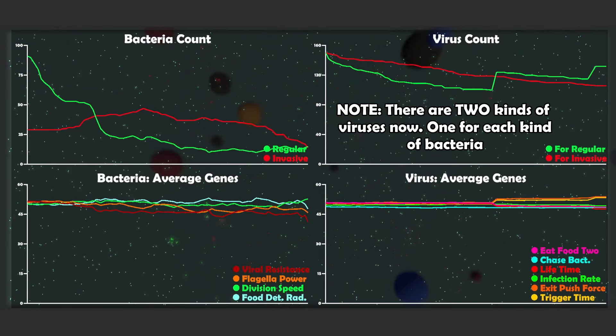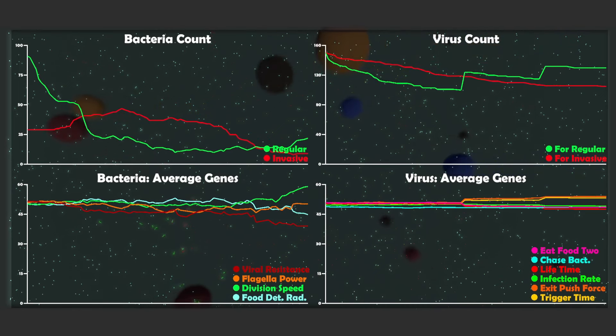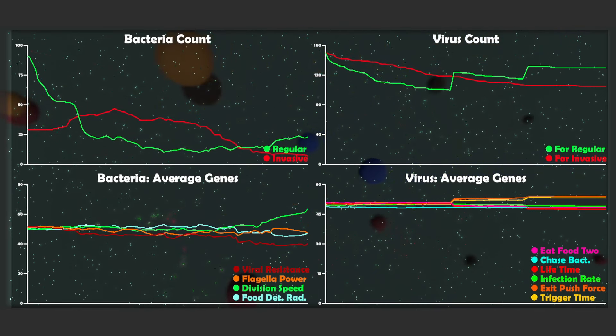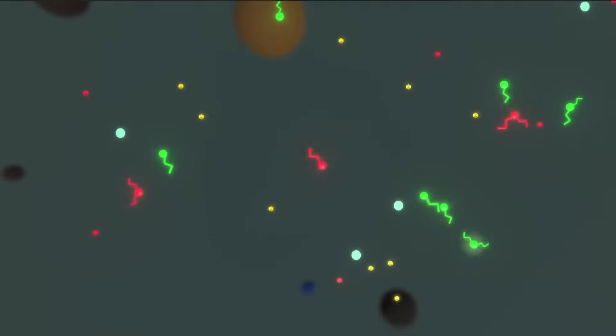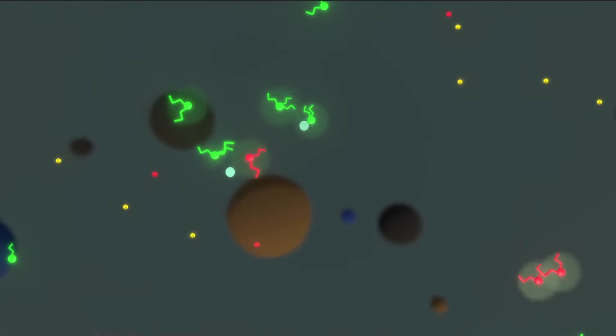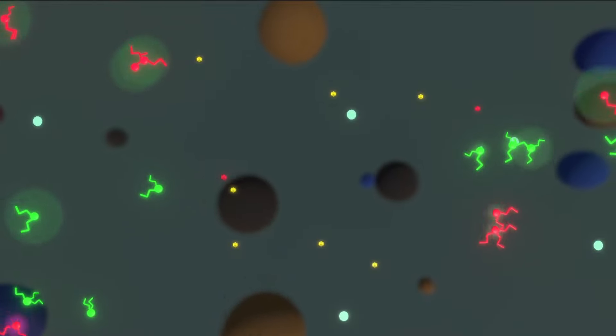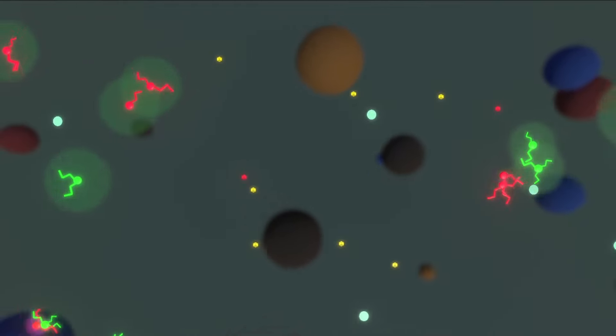I hope you can appreciate that it's getting much harder to balance these simulations since now that there are many microbes that are running at the same time, there is many more things to balance. In fact, I have realized that due to the added pressure from the invasive bacteria, the regular ones already had a harder time to survive. So when I added the viruses on top of that, they had no chance of surviving. So I actually made the viruses overall less successful to balance this.